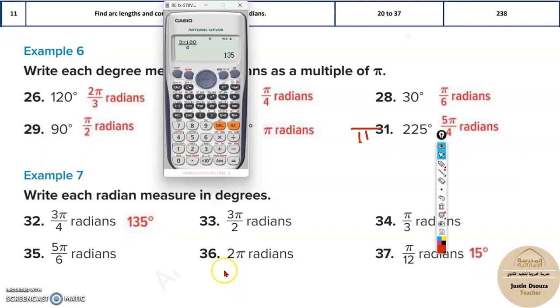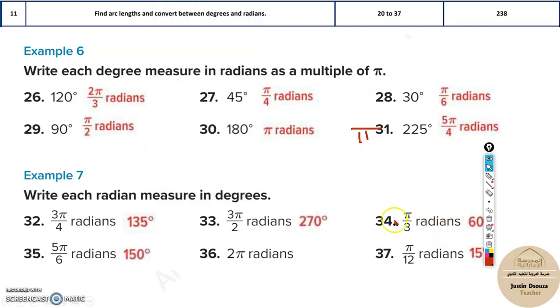Same way over here, 2π means 360 degrees. Now, all the others, just solve it by yourselves. You can try it. π by 3, that means it is 180 divided by 3. It's 60 degrees. Similarly, please do solve all of these by yourself and check the answers.